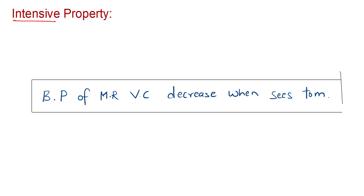Intensive property is really simple. Just remember intensive properties like BP of MR VC decrease when C is stormed. BP is blood pressure - blood pressure of MR VC decreases when C is stormed. B is called boiling point.